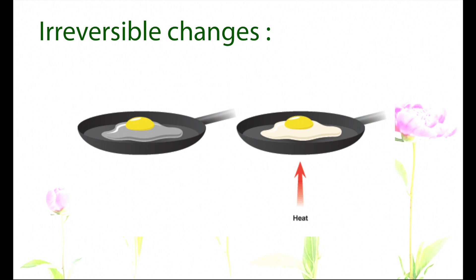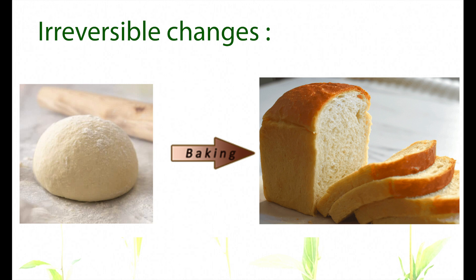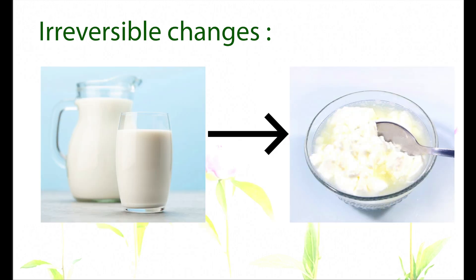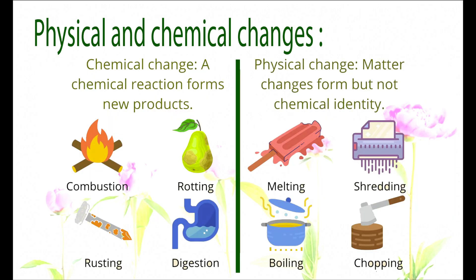From dough, if we bake it we get bread, but the bread cannot be changed back into dough. Similarly, when milk is turned into curd, we cannot get milk back from the curd. So in irreversible changes, we don't get the original product back, whatever process we follow.